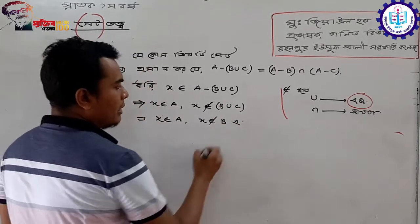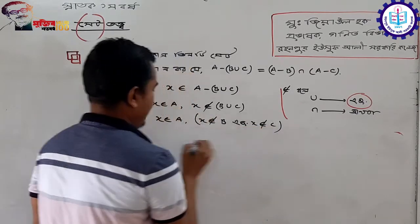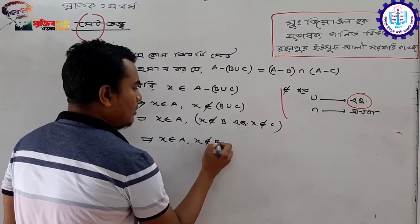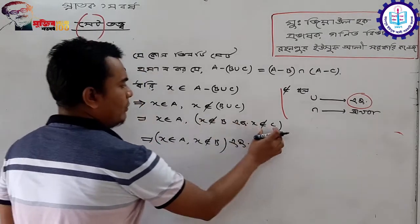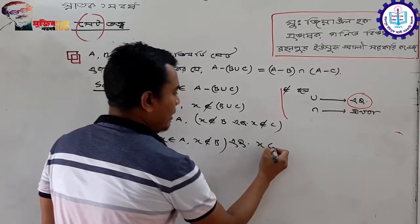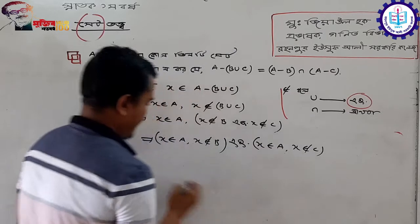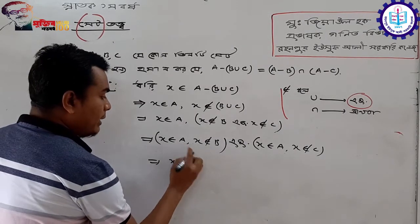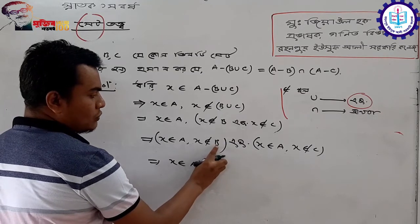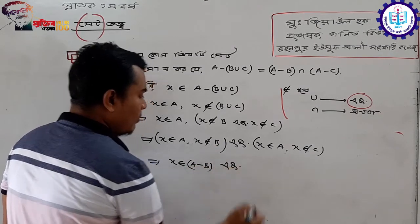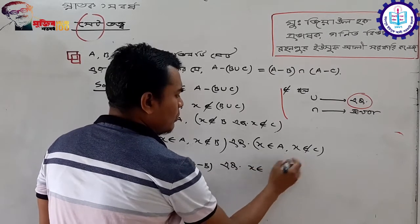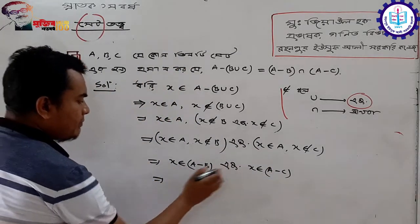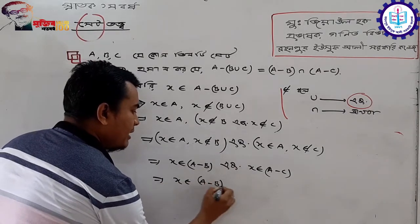x belongs to A, x belongs to B, and x belongs to C. Union becomes: x belongs to A, x not belongs to B, and x belongs to A, x not belongs to C. Union becomes: x belongs to A, x belongs to C.